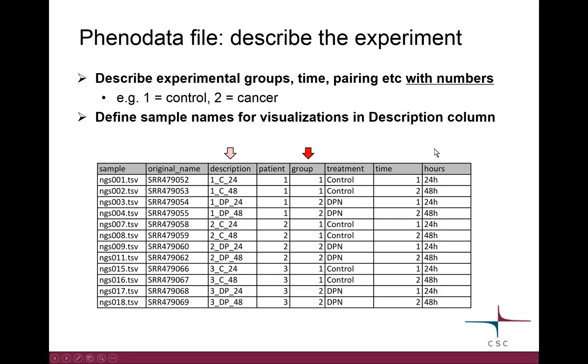Depending on your experiment, you create the columns that you need. The most important thing is to use numbers here. Then I want to point out this other column which also has a special meaning: the description column. This column, which is titled description, is what is used for the plots. When you make images for publication, for example, you probably don't want to have just file names there for the samples, but you want to name them some other way. So what you write there will appear in your images that you create in Chipster.